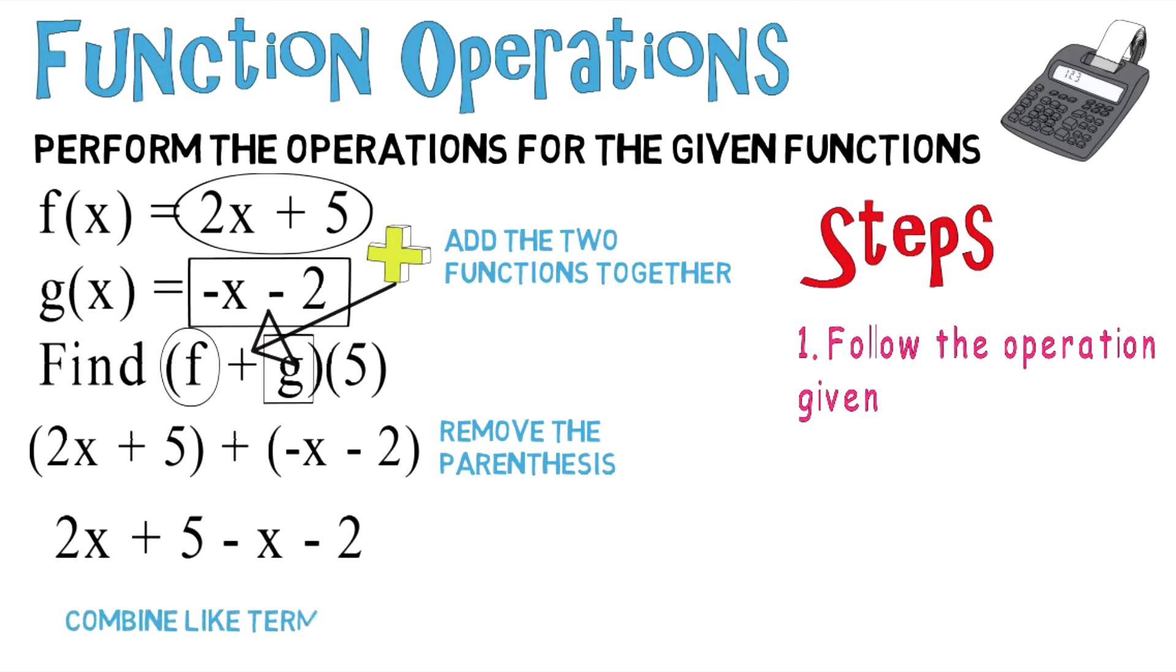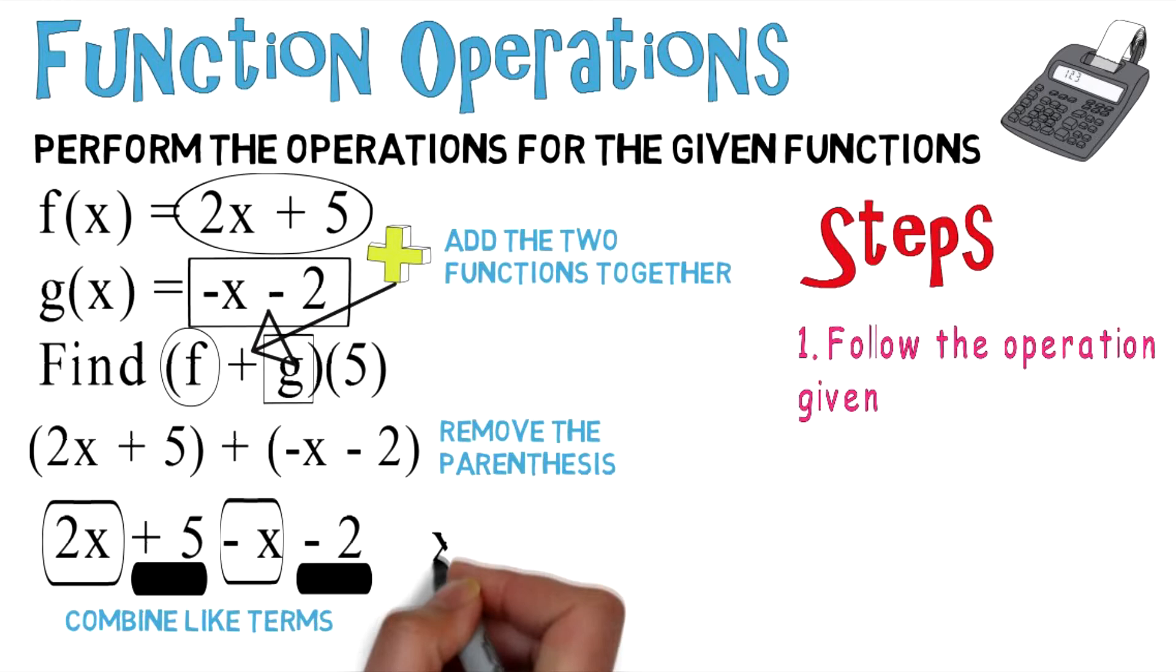From here, you can identify your like terms. 2x and negative x are like terms. Positive 5 and negative 2 are both constants, so those are like terms as well. You can combine like terms together, and you wind up with x plus 3.